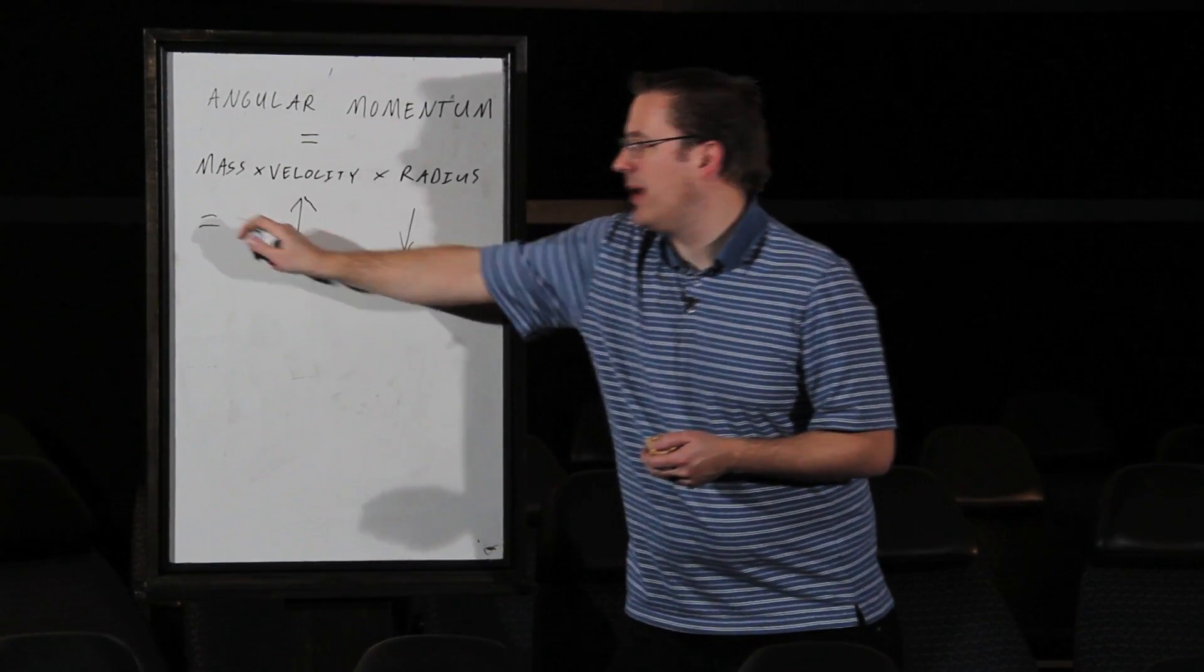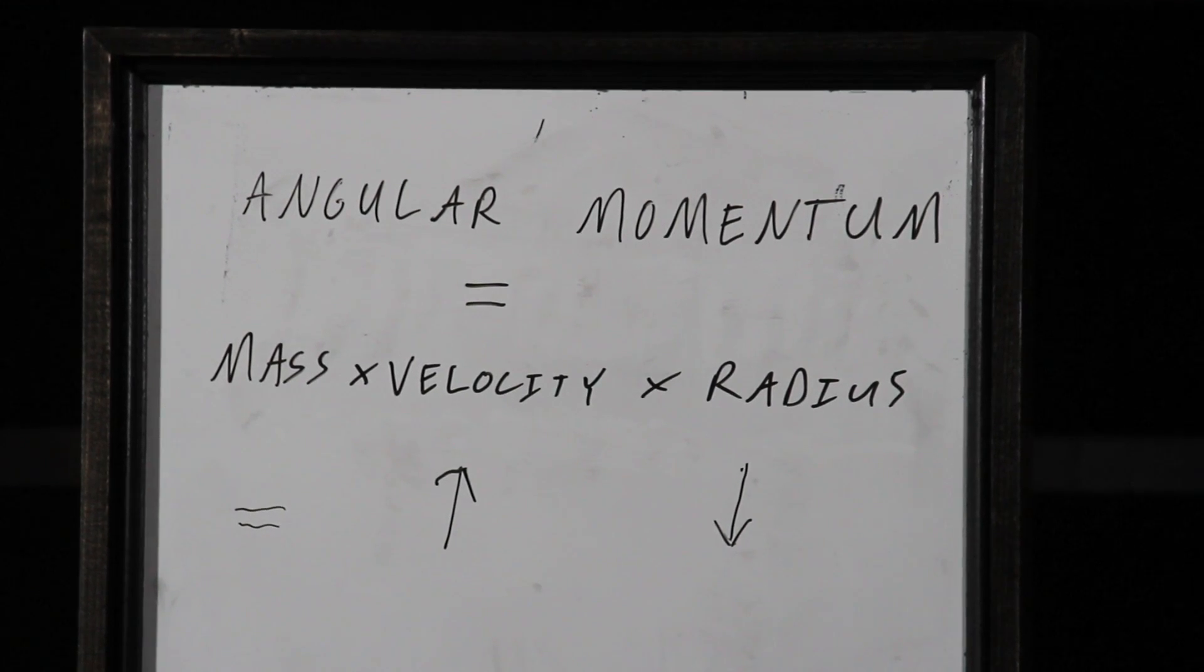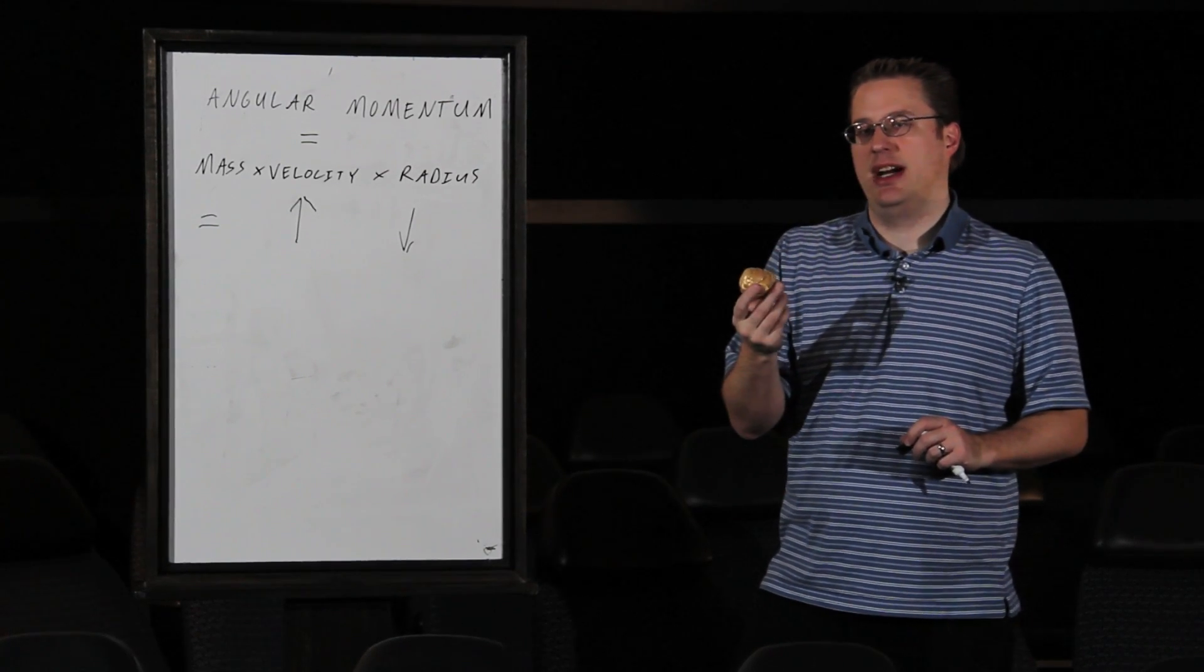The mass remained about the same, and so now instead of a slowly spinning wide disk, you have a really quick spinning ball out there in space, and this happened with all of our gas giants.